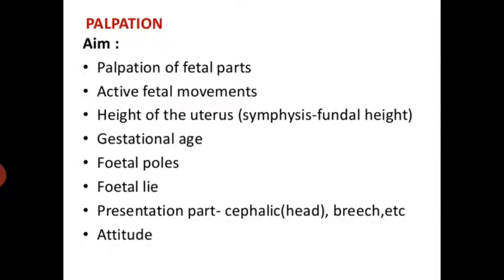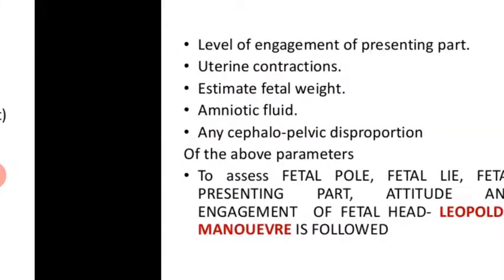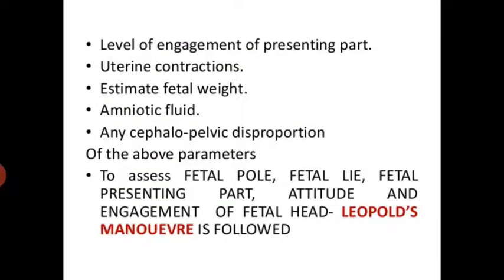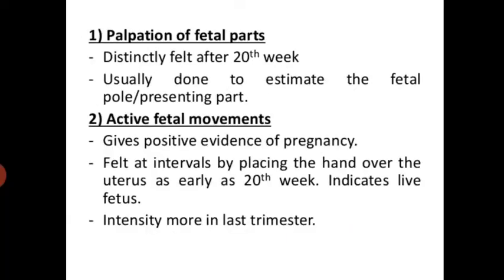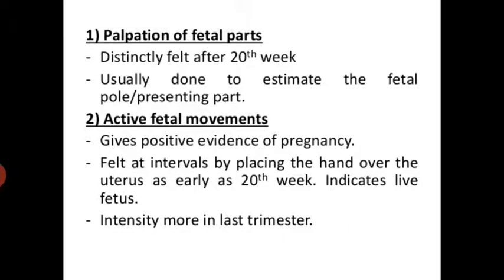Palpation of fetal parts includes assessment of: active fetal movement; height of uterus and symphysis-fundal height; gestational age; fetal pole; fetal lie; presenting part (cephalic — head, or breech presentation); attitude; level of engagement of the presenting part; uterine contraction; estimated fetal weight; amniotic fluid; and any cephalopelvic disproportion. To assess fetal pole, fetal lie, fetal presenting part, attitude, and engagement of the fetal head, Leopold's maneuver is followed. Palpation of fetal parts is distinctly felt after the 20th week and is usually done to estimate the fetal pole or presenting part.